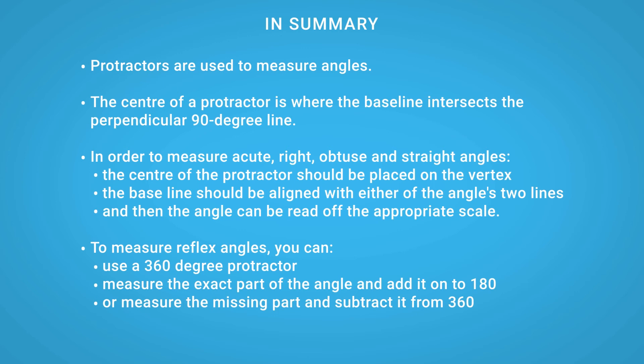In order to measure acute, right, obtuse and straight angles, the centre of the protractor should be placed on the vertex. The baseline should be aligned with either of the angle's two lines, and then the angle can be read off the appropriate scale.